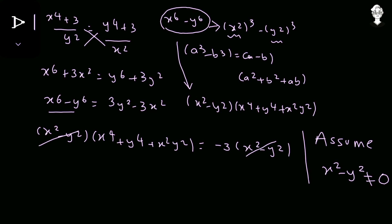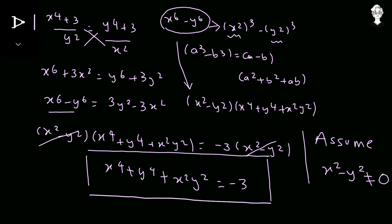Canceling x² minus y² from both sides gives us x to the power 4 plus y to the power 4 plus x²y² equals negative 3. But this equation is impossible: on the left-hand side, all three terms have even powers, making them positive. The sum of three positive terms cannot equal negative 3, so this is a contradiction.